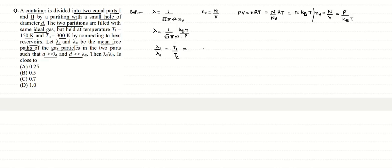λ1/λ2 = T1/T2. T1 is given as 150, T2 is given as 300, so the ratio is 150/300 = 1/2 = 0.5, which is